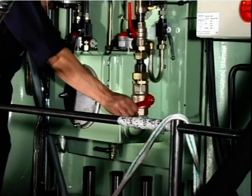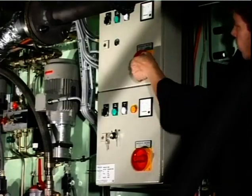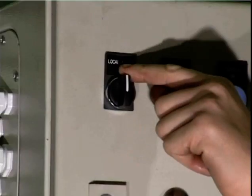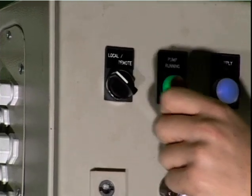Open the valve in the cylinder oil supply line. Switch on the electrical power supply. Start both oil supply pumps and check that they are able to run simultaneously.